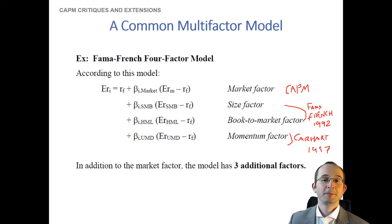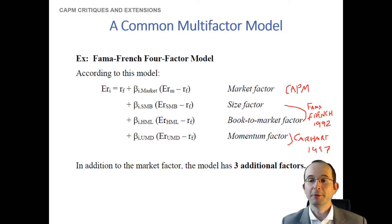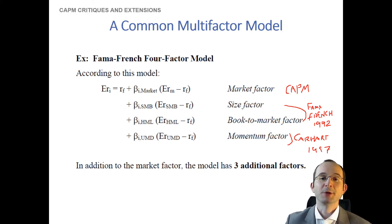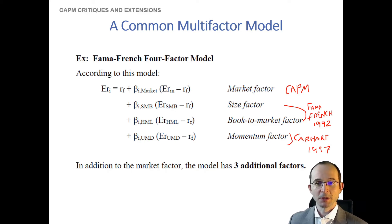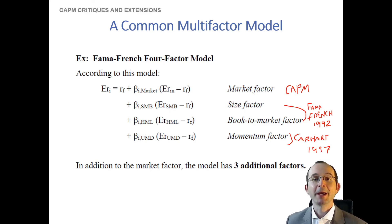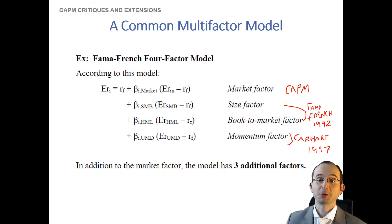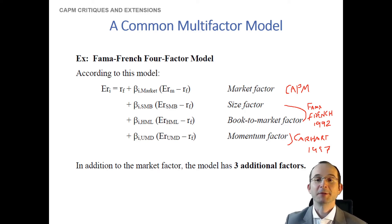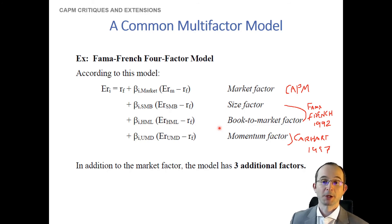This model includes the CAPM factor plus three additional factors, and we observe that it explains the cross-section of returns better than the CAPM alone. Whether this is because these factors are theoretically relevant to the pricing of returns, or simply because they compensate for shortcomings in how we estimated the market factor in the CAPM, is less clear and still a subject of ongoing research. People try to come up with equilibrium explanations for why these other factors might be priced in theory, but for now we observe that they do matter for expected returns in practice from an arbitrage pricing theory perspective.